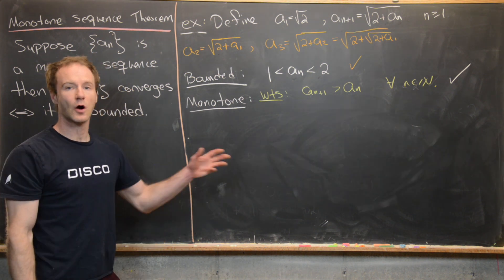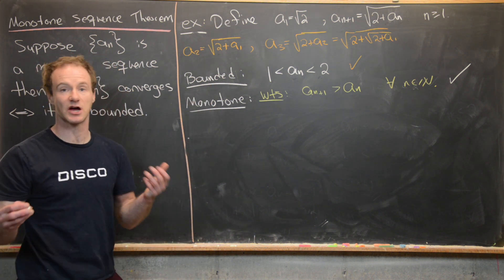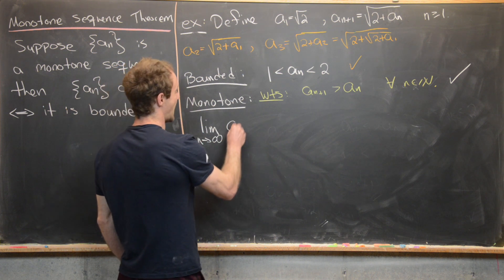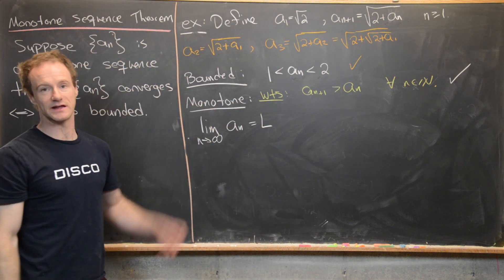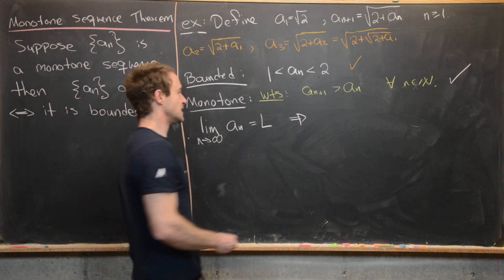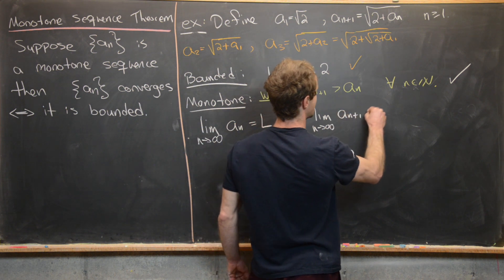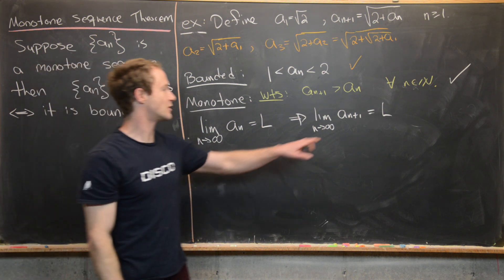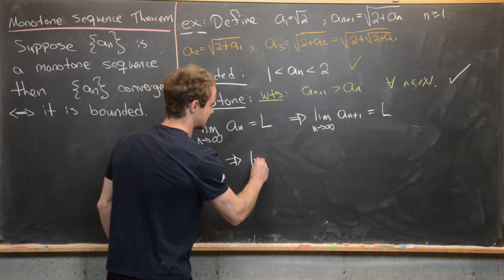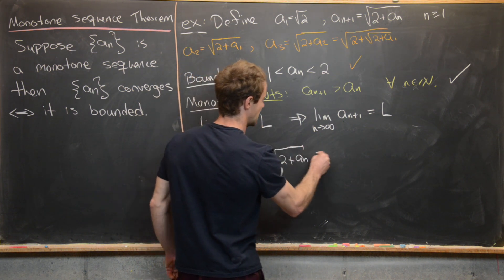The sequence is both bounded and monotone, so by the monotone sequence theorem it converges. Let's find the limit. Let L equal the limit as n goes to infinity of a sub n. By a standard result, the limit as n goes to infinity of a sub n+1 is also equal to L. Using the recursion to express a sub n+1 in terms of a sub n, we get the limit as n goes to infinity of the square root of 2 plus a sub n equals L.